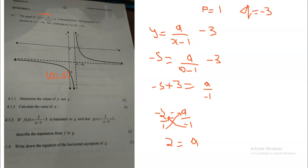So now you've got five marks based on the first two calculations. Instead of a, you're going to have two. The good thing is that in 4.1.3 they're actually telling you that a is two — so in 4.1.2 we were proving 4.1.3. It's correct, so you'll be happy knowing you've got five marks already. The question says f(x) equals two over x minus one minus three, and now they're translating it to g(x) equals two over x minus three plus three.